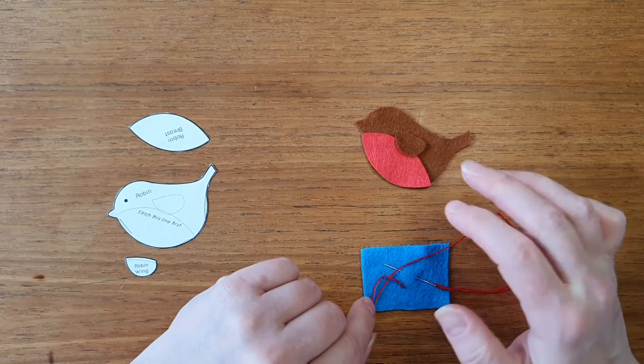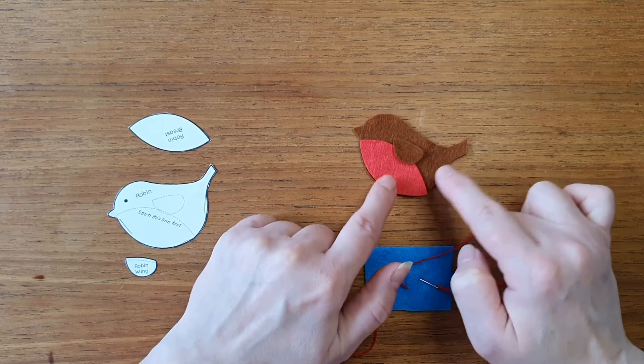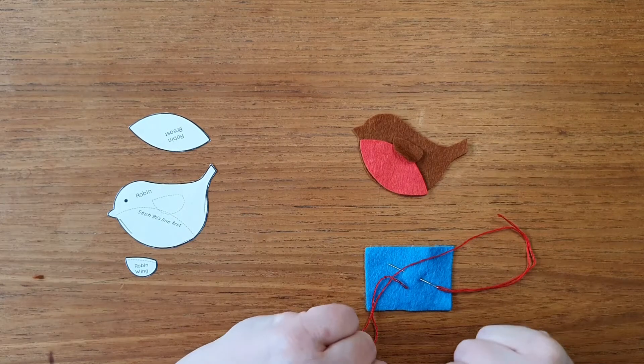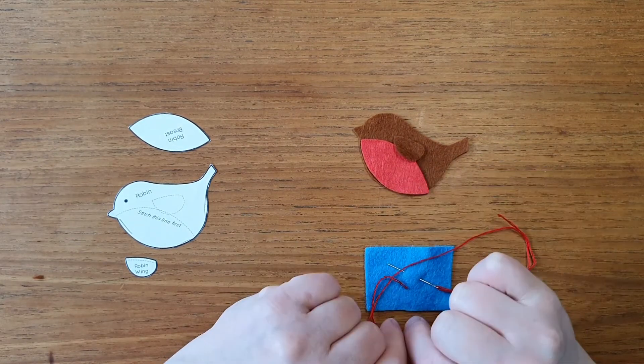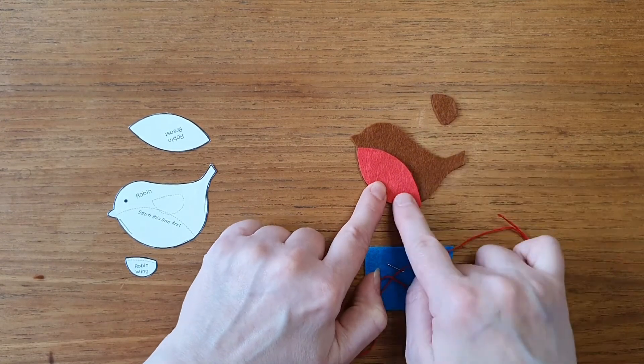That's going to help me decide what to sew first and how to sew it. With the little robin, I want the wing to have a little 3D effect, so I'm not going to stitch this bottom part of the wing on. So I can't sew the wing first. If I take that off, I'm going to...